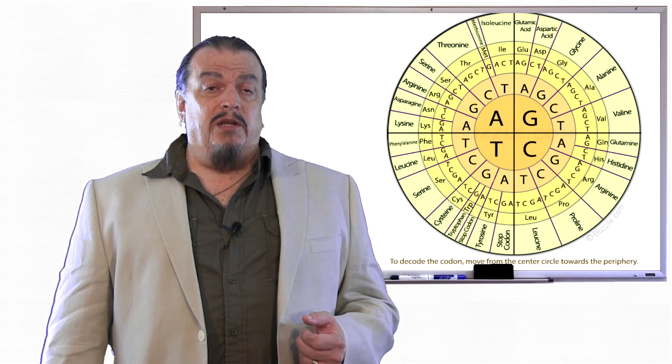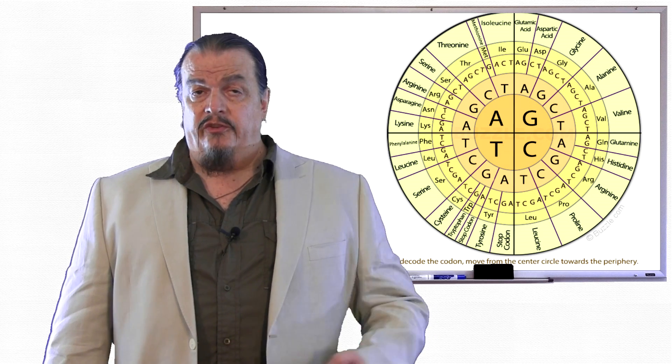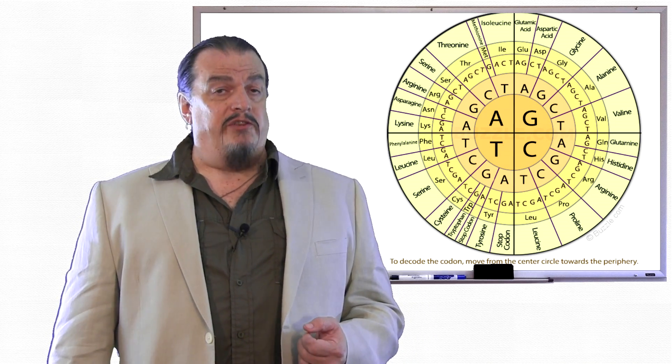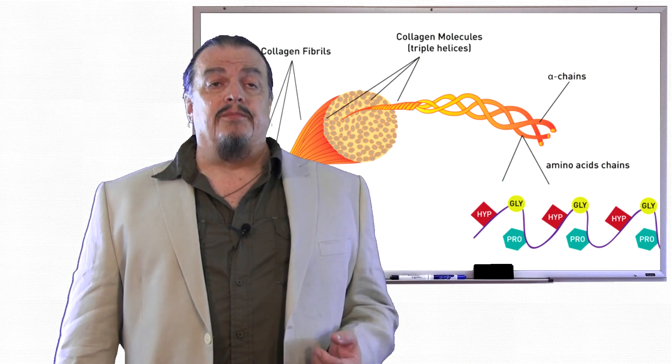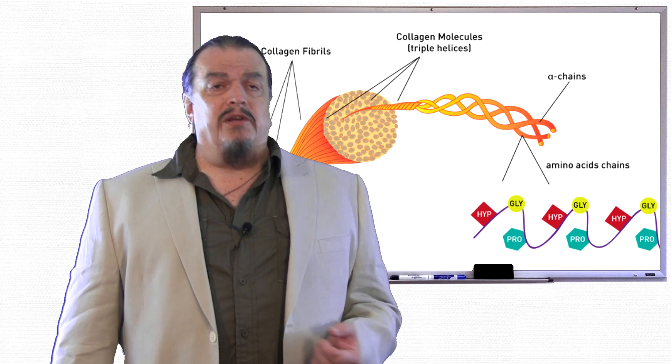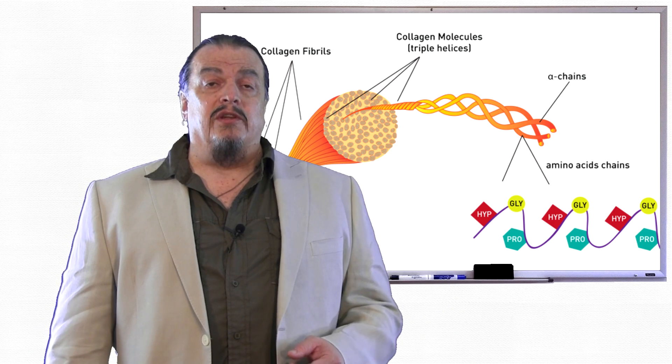For example, on the chart, the amino acid glycine is formed by the combinations of GGT, GGC, GGA, and GGG. Glycine is one of the amino acids in the protein collagen. And collagen is the most abundant protein in your body. Your skin, bones, tendons, and ligaments all have collagen proteins in them.